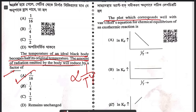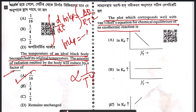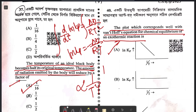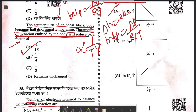Question 40: the plot which corresponds with the Van't Hoff equation for chemical equilibrium of an exothermic reaction. The Van't Hoff equation says d(ln Kp)/dT = ΔH/RT². Integrating gives ln Kp = -ΔH/RT + constant. Since the reaction is exothermic, ΔH is negative, so a plot of ln Kp versus 1/T will give a positive slope. The answer is C — consistent with y = mx + c.